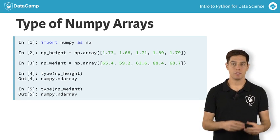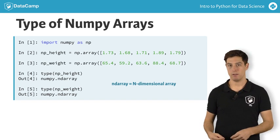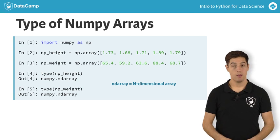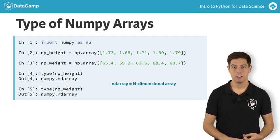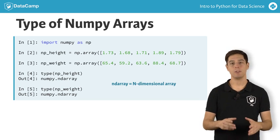numpy.ndarray tells you it's a type that was defined in the NumPy package. ndarray stands for nDimensionalArray. The arrays npHeight and npWeight are one-dimensional arrays, but it's perfectly possible to create two-dimensional, three-dimensional, heck even seven-dimensional arrays. Let's stick to two in this video though.